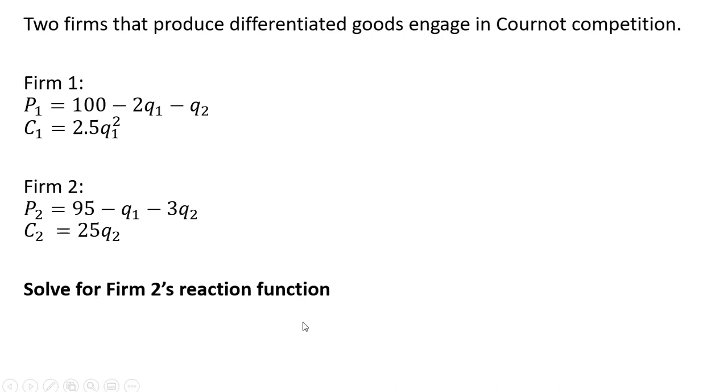We're going to first solve for firm 2's reaction function. We set up firm 2's profit function which is going to be firm 2's price times its output. That's firm 2's revenue and then we're going to subtract from it firm 2's cost. We're going to make substitutions now into this formula. P subscript 2 is going to be replaced with 95 minus Q subscript 1 minus 3Q subscript 2. Making that substitution in, and then we're going to plug in our cost function of minus 25Q subscript 2.